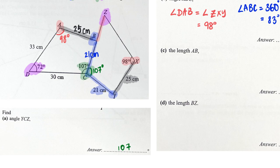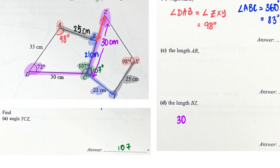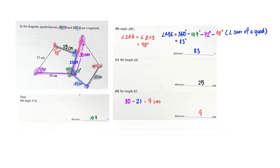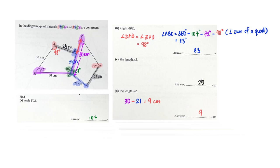I also know that D to C — which is Z to C — is 30. So from there I can find this particular length, which is simply 30 minus 21, giving me 9 cm. And that sums up this particular question. Let's move on to the next question.